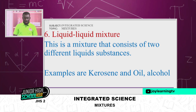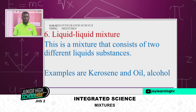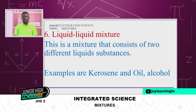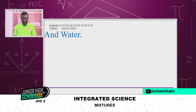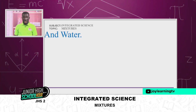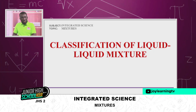Liquid-liquid mixture is a mixture that consists of two different liquid substances. Examples: kerosene and oil — when you pour oil on kerosene, one displaces the other. We also have alcohol and water — whenever you have alcohol and water, you can see a clear difference between them. Classification of liquid-liquid mixture — liquid mixtures are classified based on the ability of the constituents to form a uniform or non-uniform mixture.